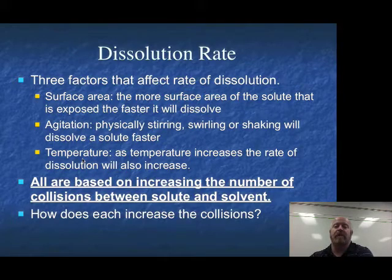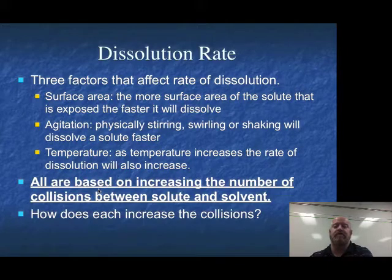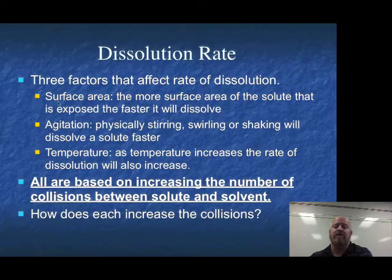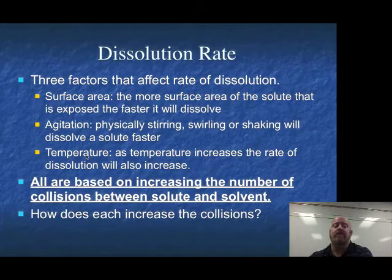Temperature is all about kinetic energy. If we raise the temperature, the particles move faster, which means more collisions can happen. Also, the faster they move, the more energy they have, so more collisions will have enough energy to start splitting apart the crystals within those crystal lattices. All three factors generate more collisions if increased. If you wanted to slow dissolving down, you'd do the opposite: minimize surface area, don't stir, and make it as cold as possible.